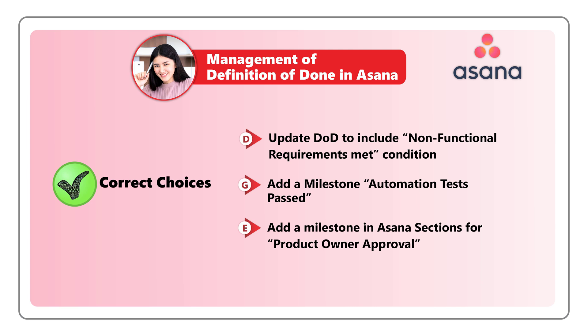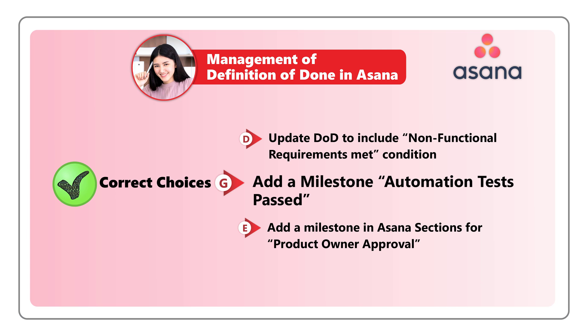To make such a change and add an additional requirement in the definition of done list, you would need to add a new item in the list, similar to the sample definition of done I showed you. In a very similar way, you can implement choice G — add a requirement for automated test passed. Choice E, add a milestone in Asana sections for product owner approval, is a little bit different.